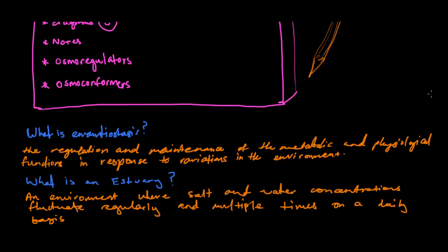Now, if these changes occur multiple times on a daily basis, enantiostasis is needed in order to allow the organism to actually survive in those types of places.